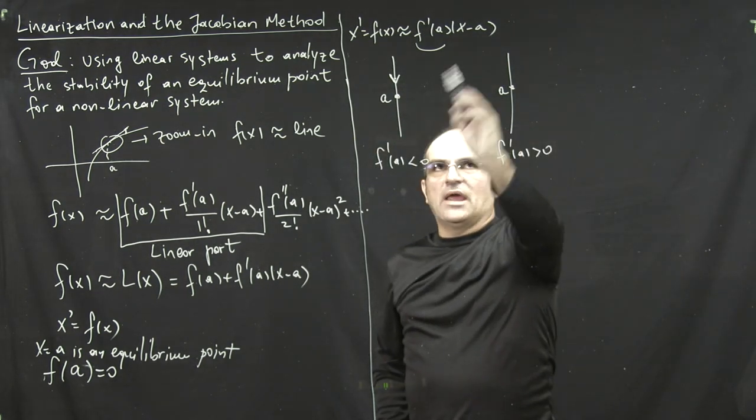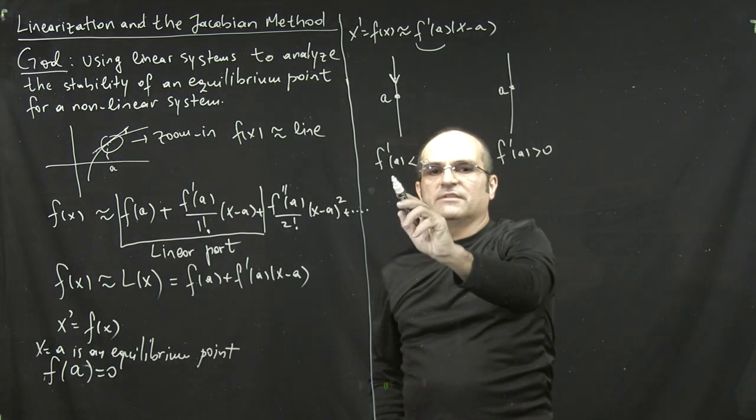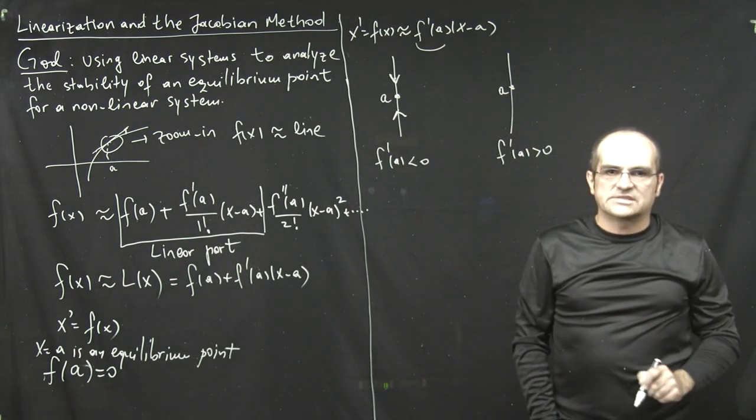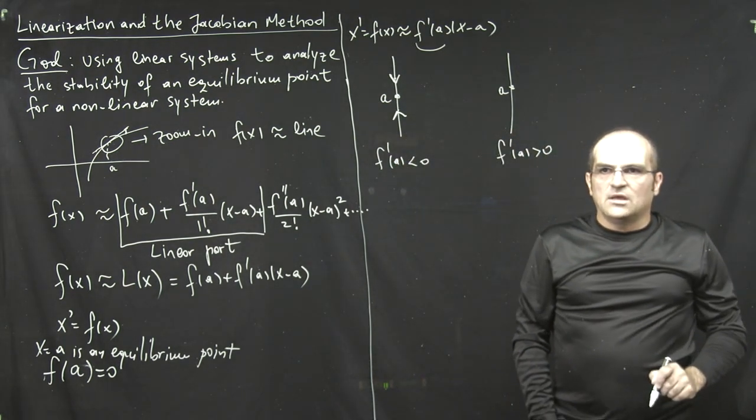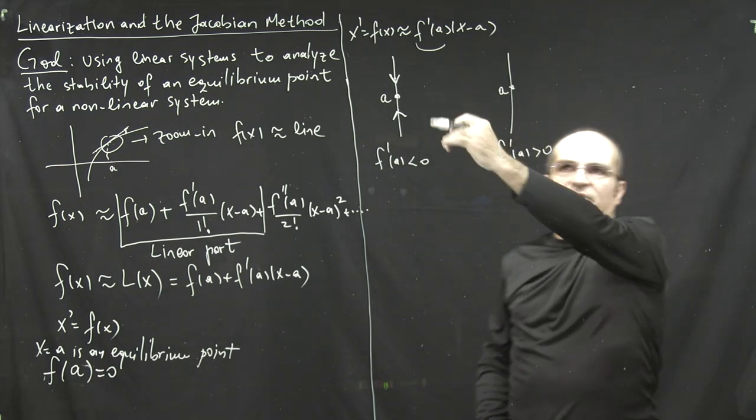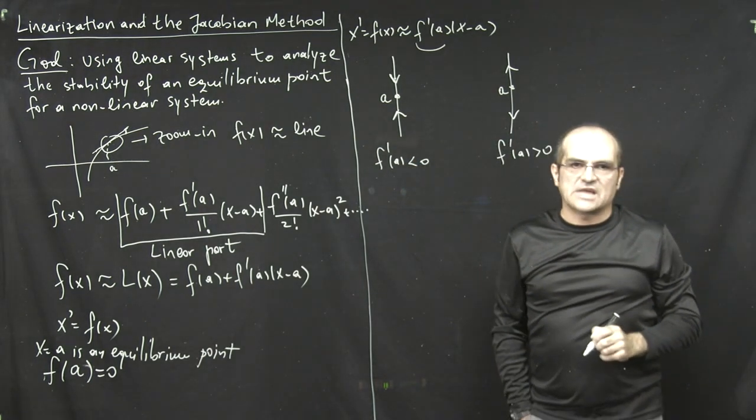If I start below a, x minus a is negative, times another negative. If f prime is negative, that means the motion is upward. If the derivative is positive, then, of course, the whole signs are flipped. And, the motion is like that, if you start above or below.